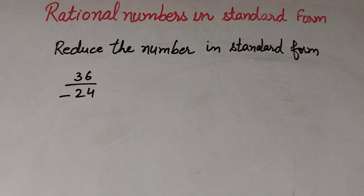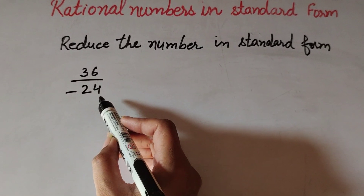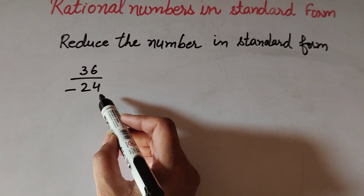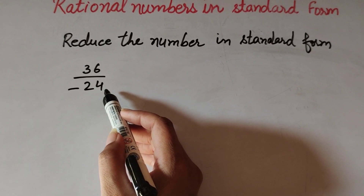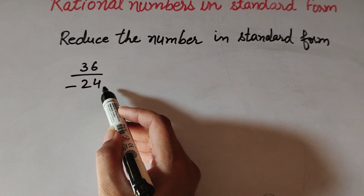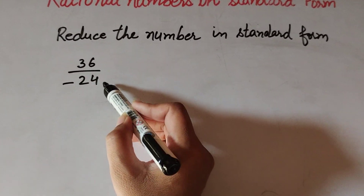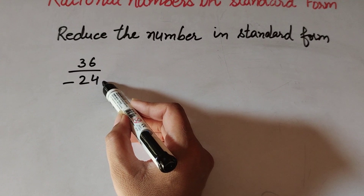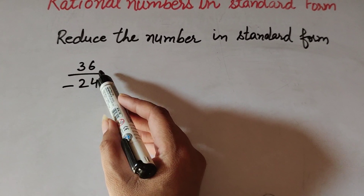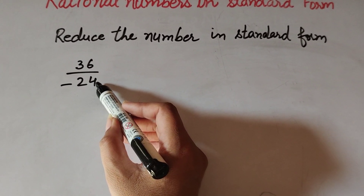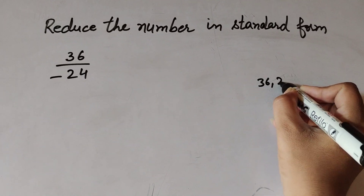Let's take one more example: 36 over -24. We reduce this number into standard form. To do so, we divide its numerator and denominator by their HCF. So we find the HCF of 36 and 24 using prime factorization.